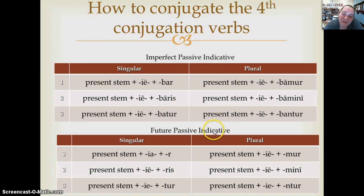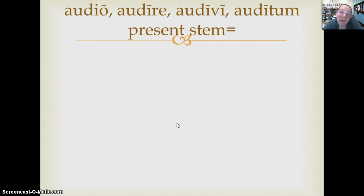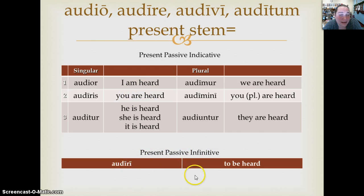The imperfect passive indicative and future passive indicative are exactly what you would expect. For the imperfect: present stem plus IE plus the passive endings — bar, baris, batur, bamur, bamini, bantur. For the future passive: IR, IER, IER, IETE, IETE, IEME, IENTE. Our paradigm verb is audio, audire, audivi, auditum. First principal part plus R gives audior — I am heard; audiris; auditur; audimur; audimini; audiuntur. We take our second principal part and replace that final E with a long I, giving us the present passive infinitive audiri — to be heard.